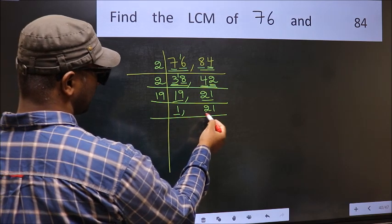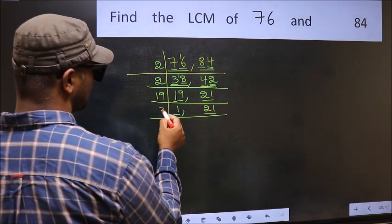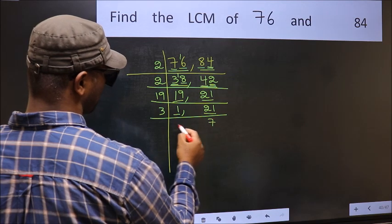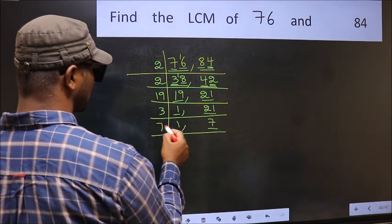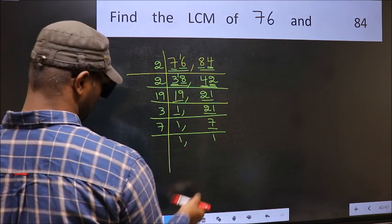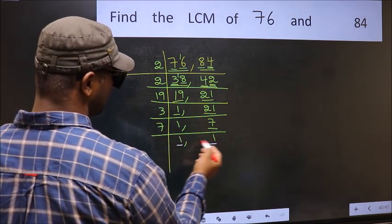Now we got 1 here. So focus on the next number 21. 21 is 3 times 7, 21. Now we have 7, 7 is a prime number. So 7 times 1, 7. So we got 1 in both the places.